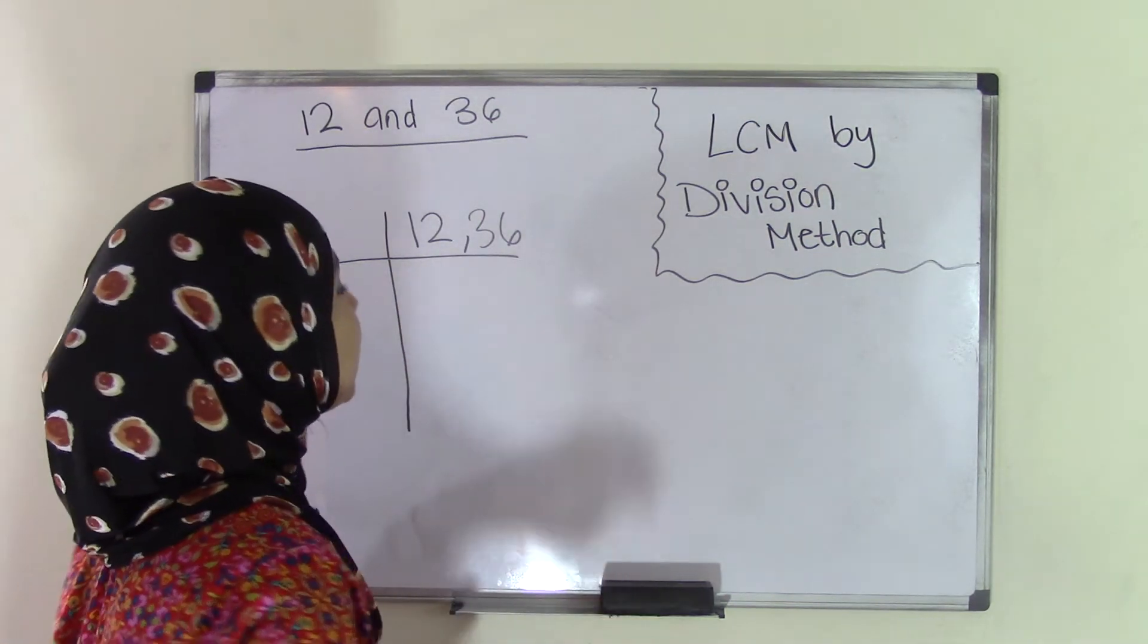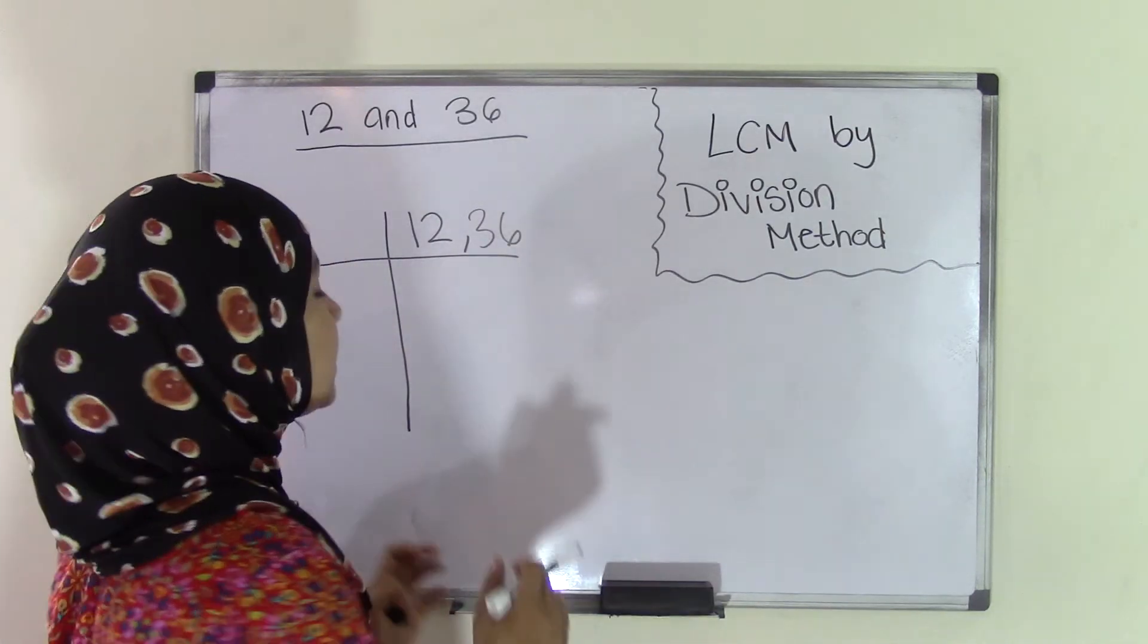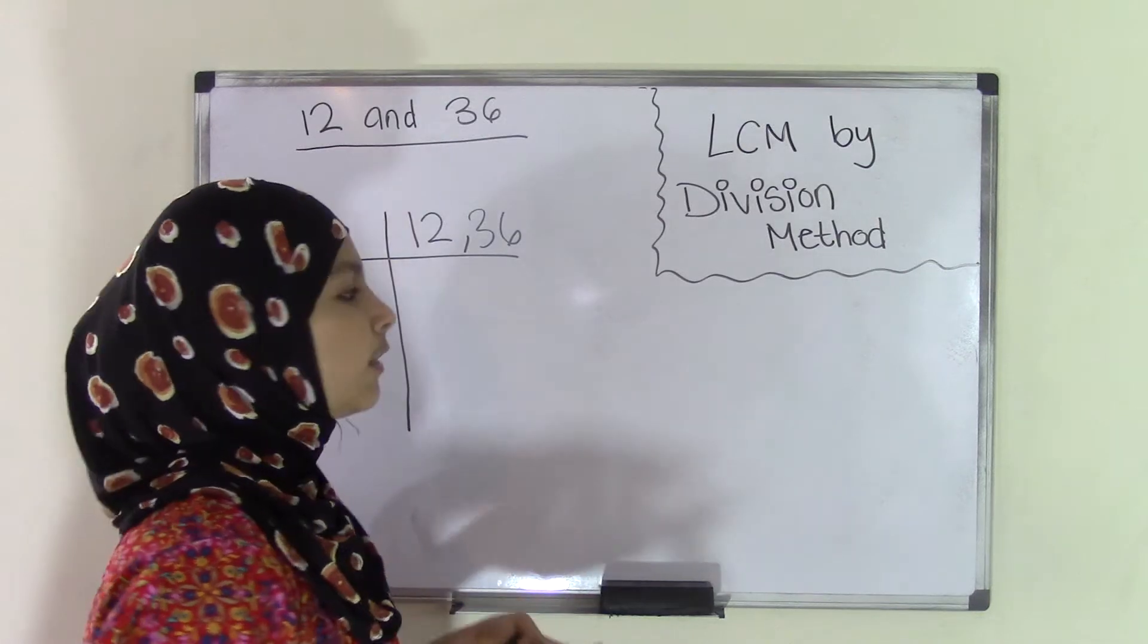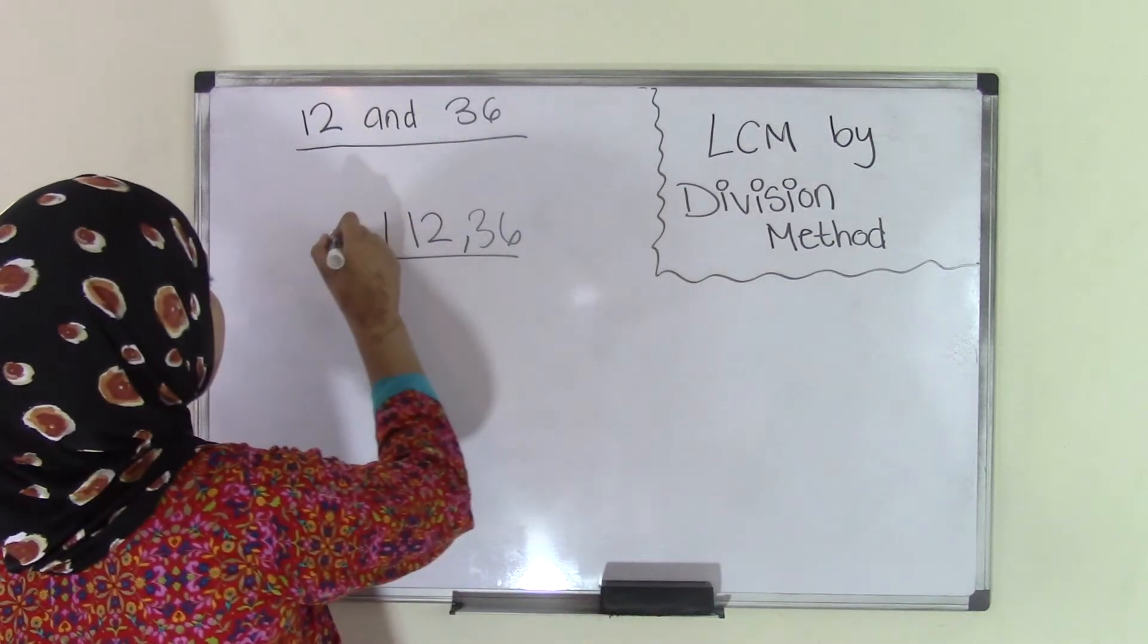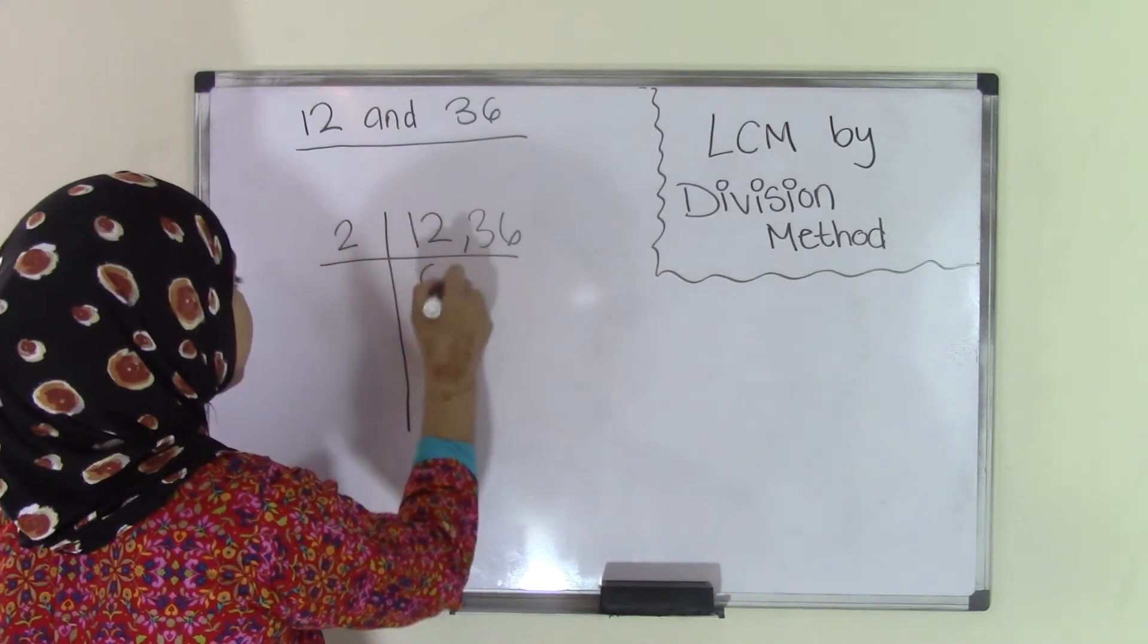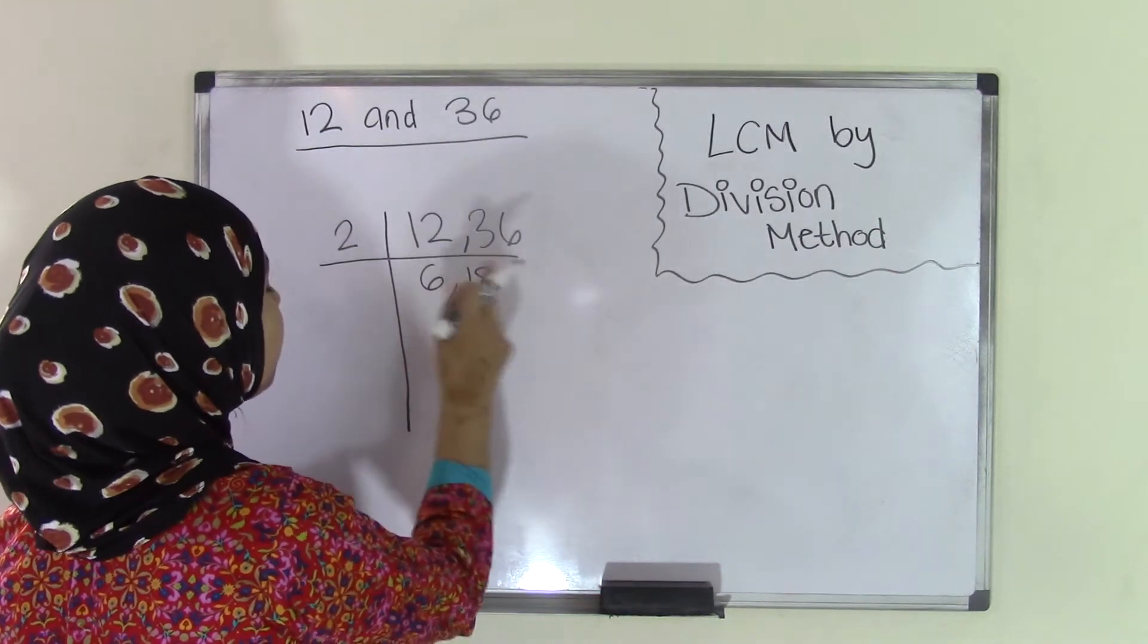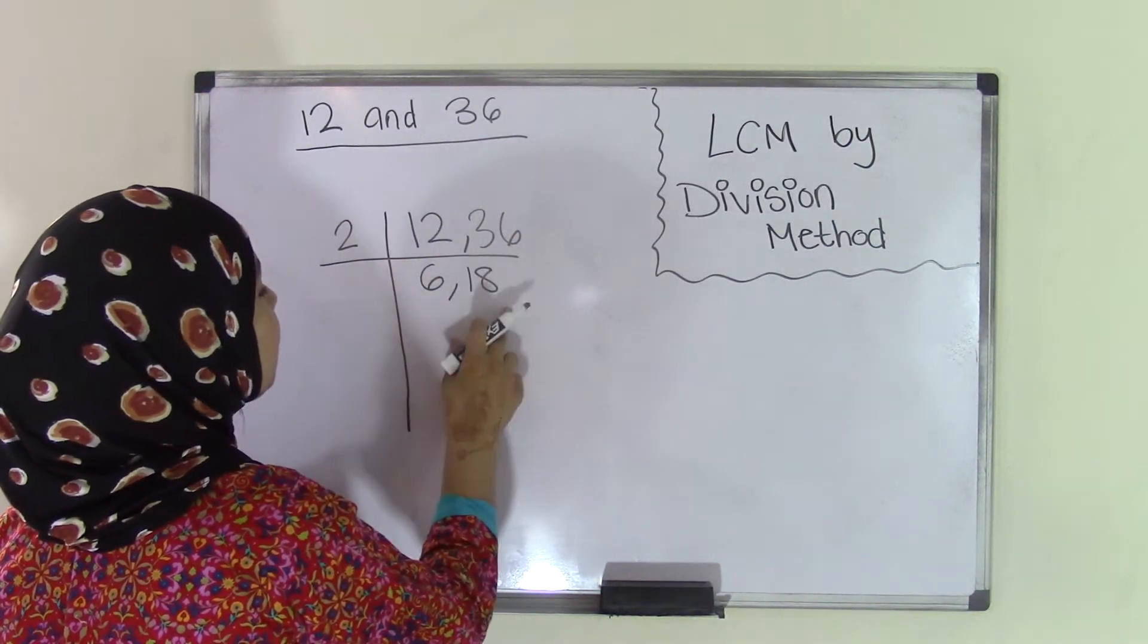Our divisor will be the least prime number that goes into both numbers evenly. Since 12 and 36 are both even numbers, we can try 2. We know that 2 goes into 12 six times, and 2 goes into 36 eighteen times. So we broke apart 12 and 36 divided by 2 to get 6 and 18.